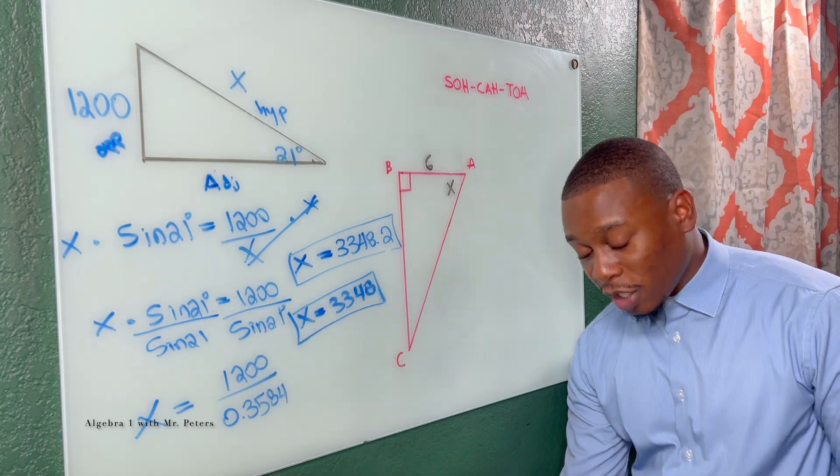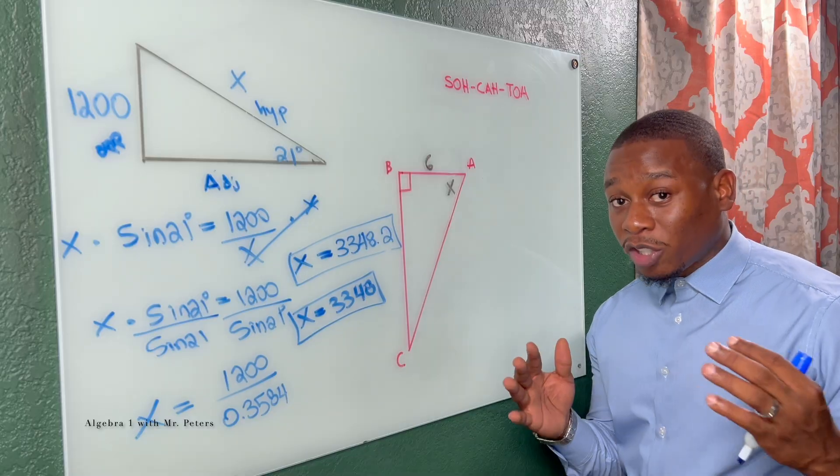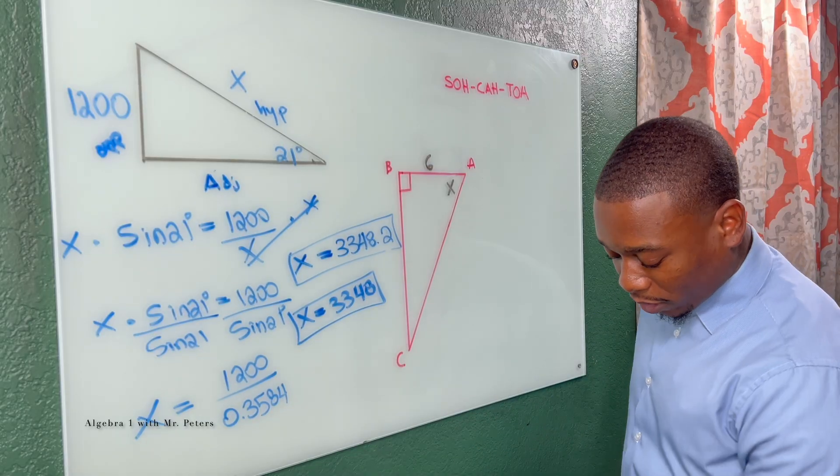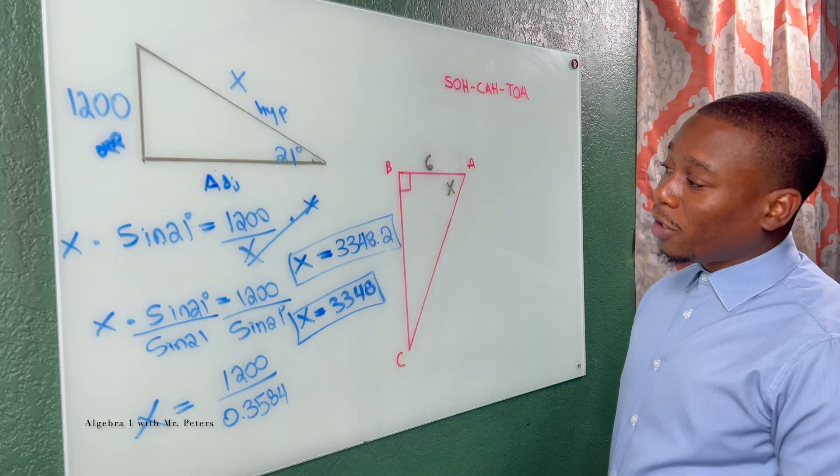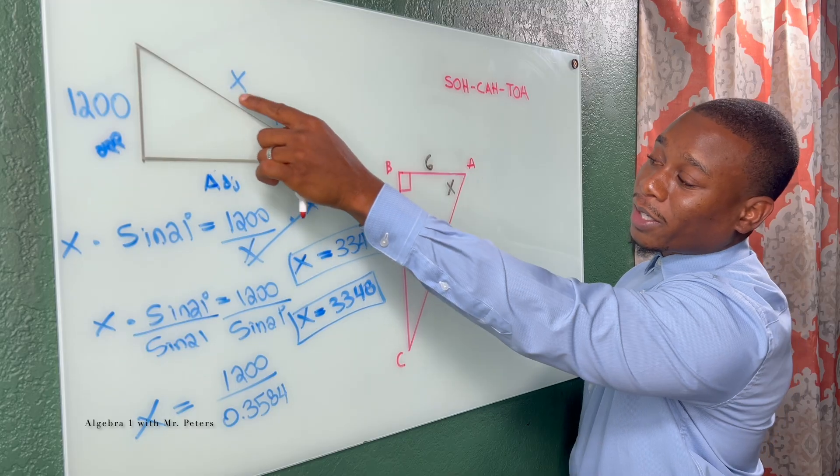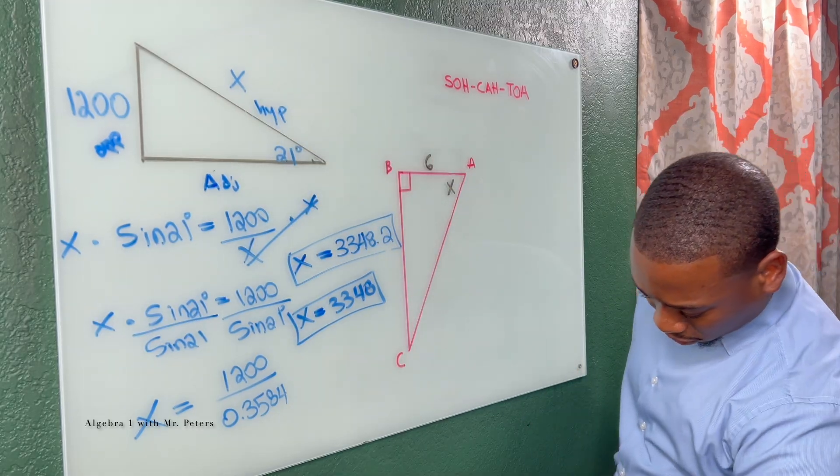Now let's shift our attention over to problem number two. And I'm going to show you the specific step where students go wrong with these types of problems. So number one, the biggest difference is we're going for an angle rather than a side.